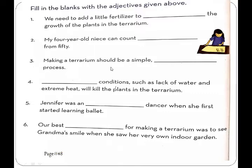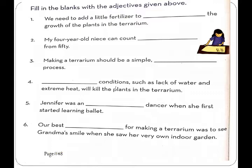Blank number 3: 'Making a terrarium should be a simple, ___ process.' The answer is 'straightforward' — straightforward means a simple and correct process. Blank number 4: '___ conditions such as lack of water and extreme heat will kill the plants in the terrarium.' The answer is 'untoward' — untoward means conditions which are not favorable.